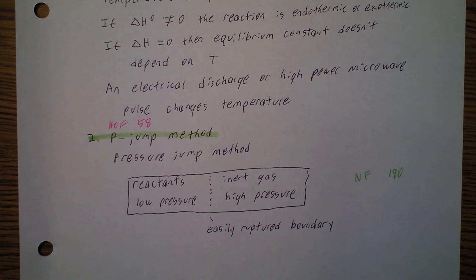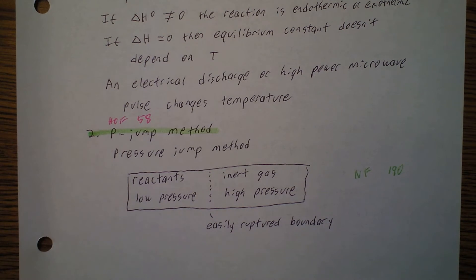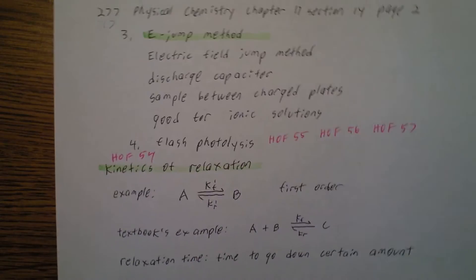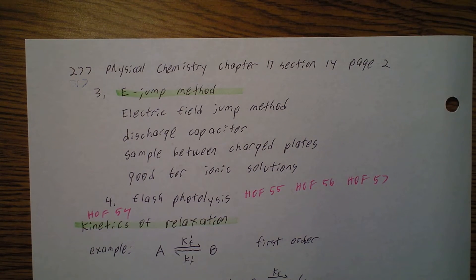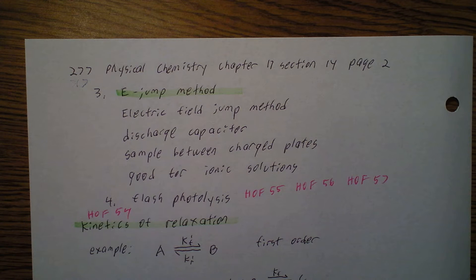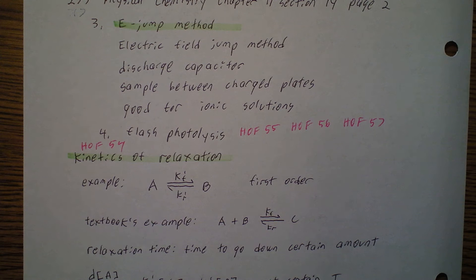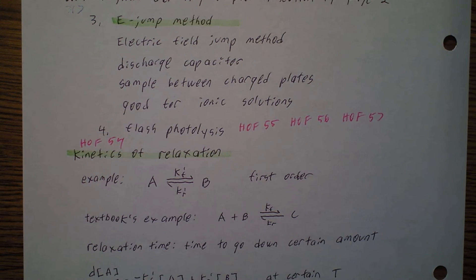The second method is called the P-jump method — capital P stands for pressure. We have reactants at low pressure and an inert gas at high pressure with a boundary between them; we rupture the boundary to increase the pressure. The third is called the E-jump method, the electric field jump method, where we discharge a capacitor — a capacitor is like a rechargeable battery but can discharge right away. Our system is placed between charged plates, which is good for ionic solutions because ions are charged particles. A fourth method is called flash photolysis, where we add a flash of light to add energy to the system.